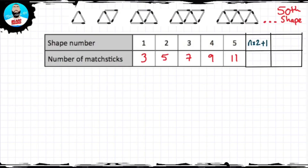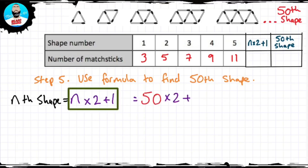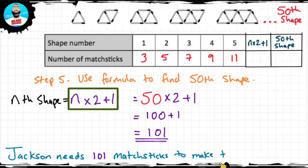Now let's work out for Jackson how many matchsticks he needs for the 50th term. We're going to substitute 50 into the formula: 50 times 2 plus 1 is 100 plus 1 — 101 matchsticks. Jackson needs 101 matchsticks to make the 50th shape. Bear in mind, this isn't always the case for every sequence — this always changes.